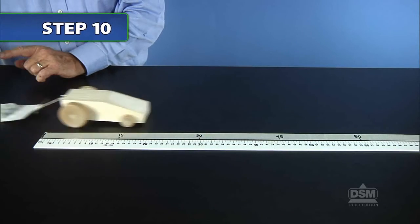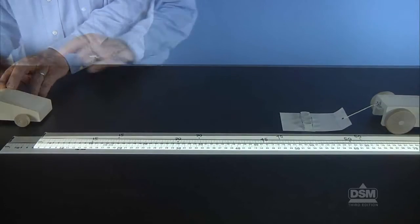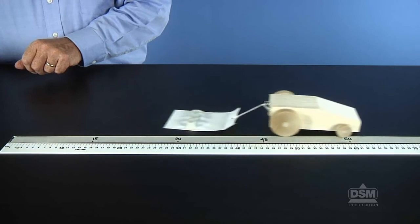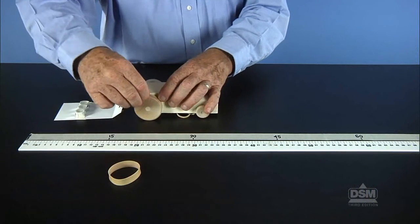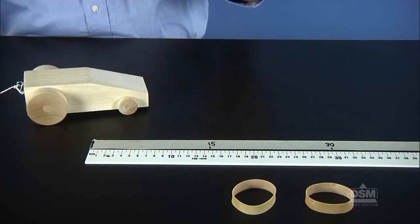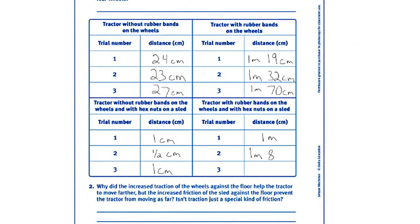Have the students conduct three more trial runs, this time with the tractors pulling the weighted sleds. Remind them to wrap the rubber band around the axle three times only and to record the distance the tractor travels. Then instruct the teams to remove the rubber bands from the rear wheels and to conduct three more trials. Remind them to record their results on their activity sheets.